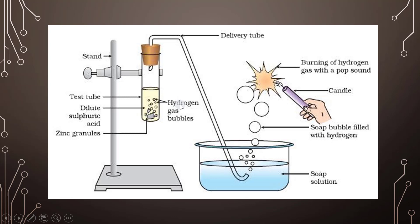The reaction between zinc granules and dilute sulfuric acid produces hydrogen gas bubbles. These bubbles pass through the delivery tube into the soap water, creating soap bubbles. When a candle is brought near these bubbles, they burst and pop, proving that the gas produced is hydrogen.